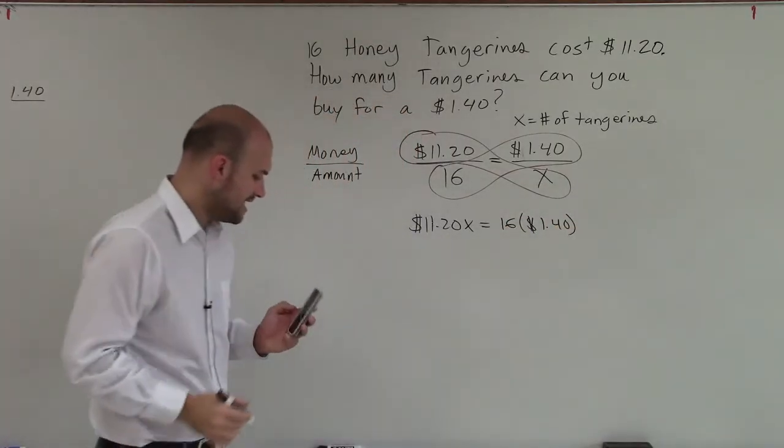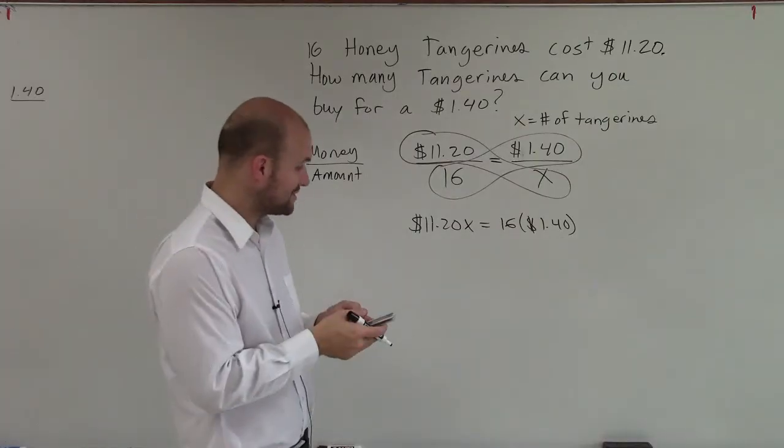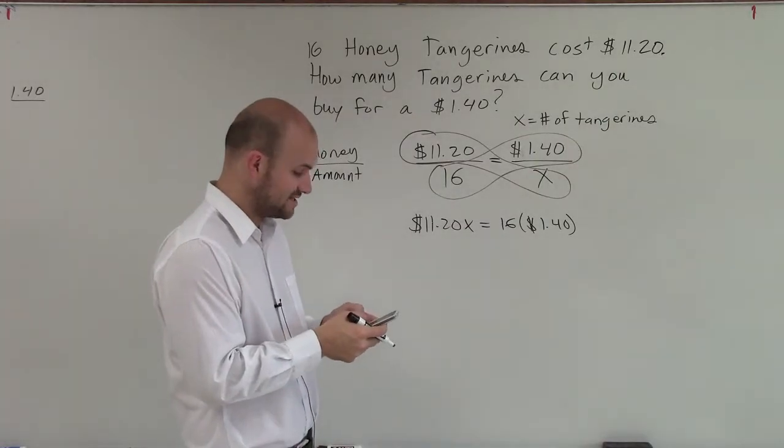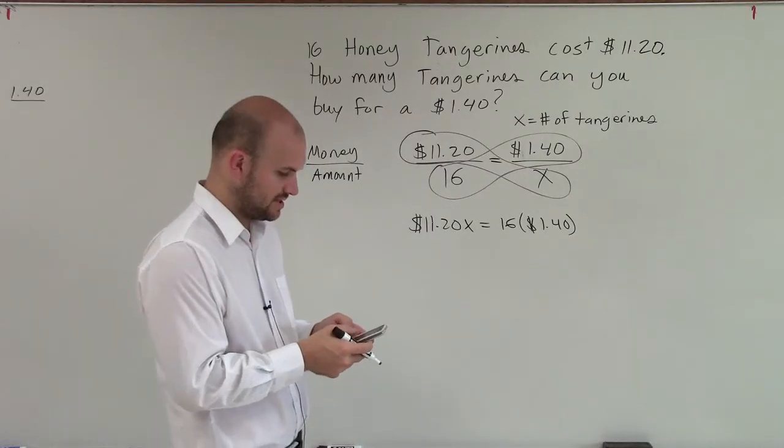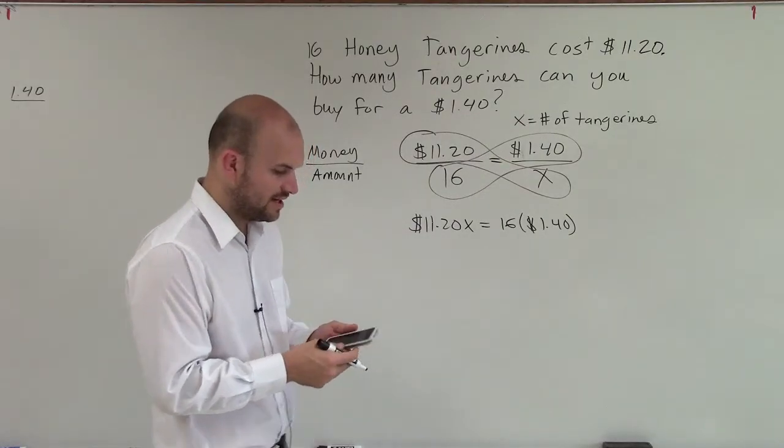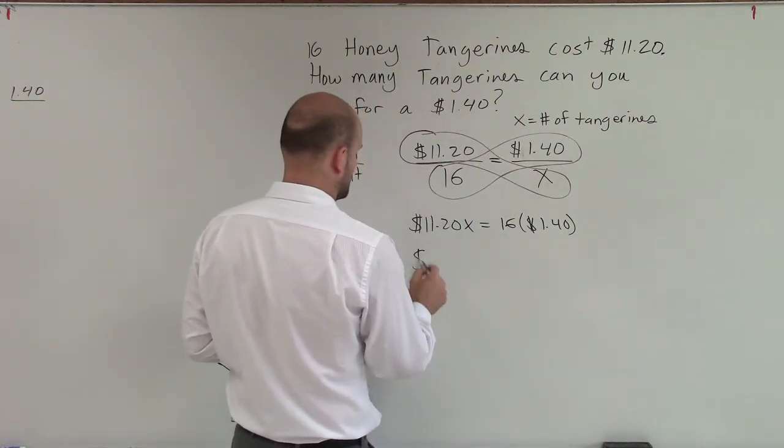All right, so then all I'm simply going to do is use my nice little handy calculator on my phone. So I do 16 times 1.40. 16 times 1.40, and I get 22.4. And that's going to be dollars.